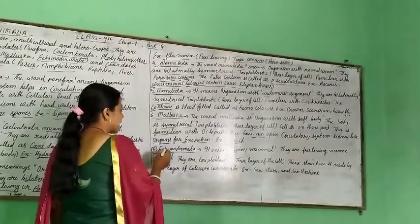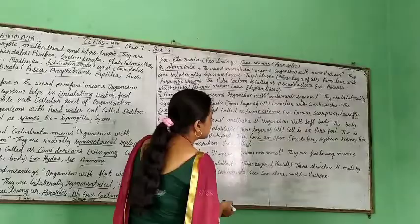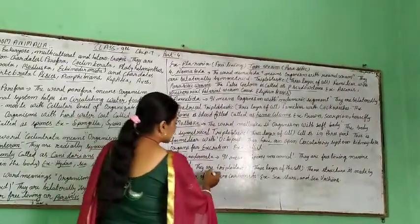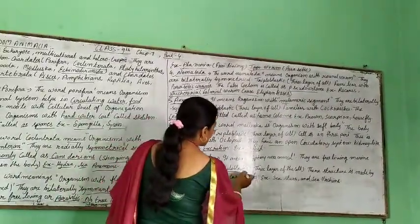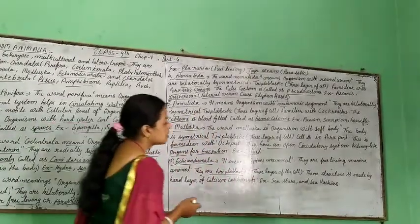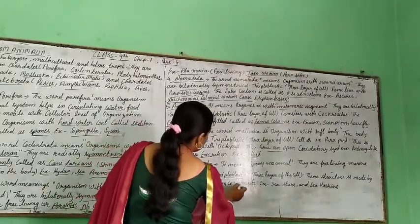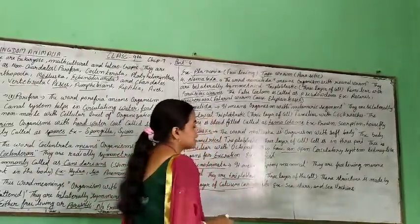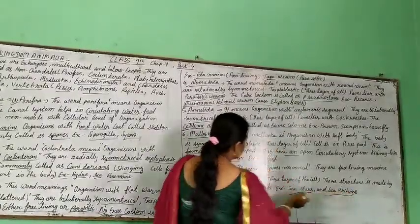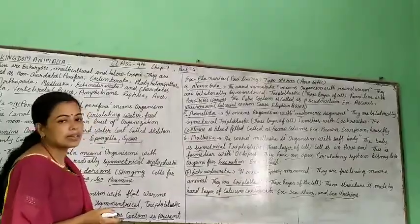Next is Echinodermata. It means spiny animals. They are free-living and marine. They are triploblastic — three layers are present in the body. Their structure is made of a hard layer of calcium carbonate. Examples: sea star and sea urchin.